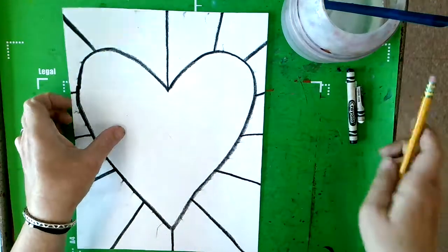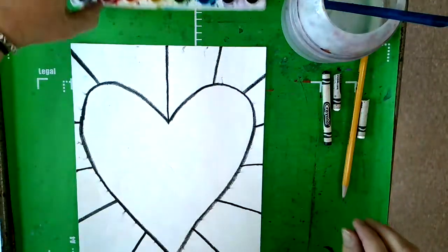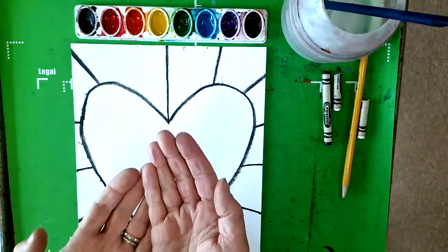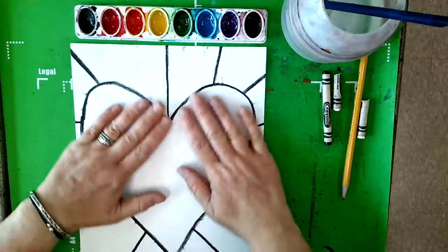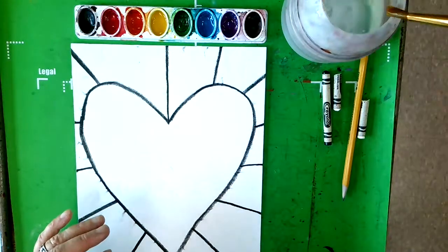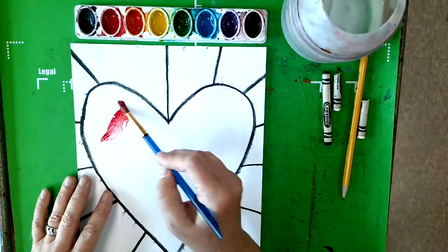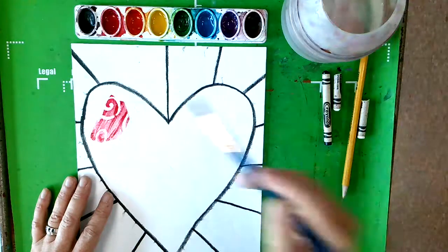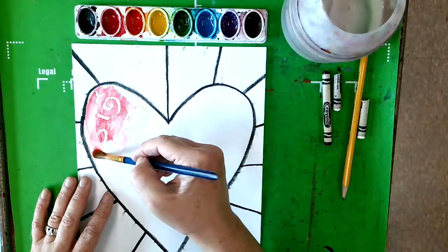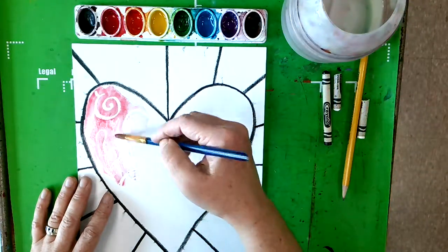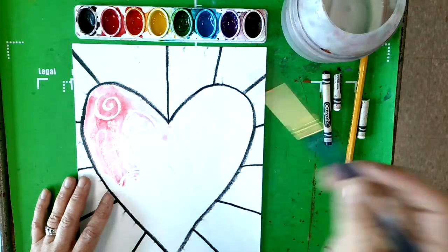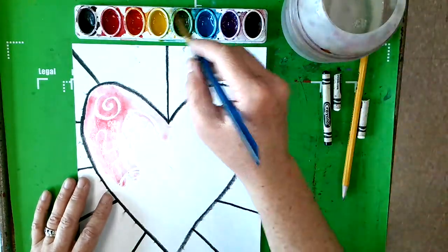The waxy crayon will resist the paint and it will show through the paint when I paint on top. Using my paint brush and a wet paint brush, I am going to put some paint right on top. Watch. Oh my gosh. Here comes the magic. See how that crayon is showing up. Oh, it's so cool. Let's see.